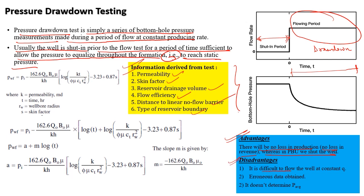Coming to disadvantages: it is difficult to flow the well at constant Q. Erroneous data are obtained since the well is flowing continuously and the pressure recorder in the wellbore experiences high disturbances from flowing fluids — the sensors record high noise. Third, it does not determine average reservoir pressure; average reservoir pressure cannot be determined using a drawdown test.